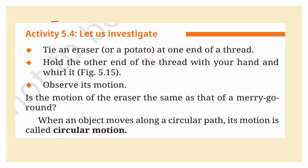Let us do an activity. Tie an eraser or a potato at one end of a thread. Hold the other end with your hand and whirl it — whirl means to spin rapidly in a quick circular movement. Observe its motion. Is the motion of the eraser the same as that of a merry-go-round? Yes. When an object moves along a circular path, its motion is called circular motion.